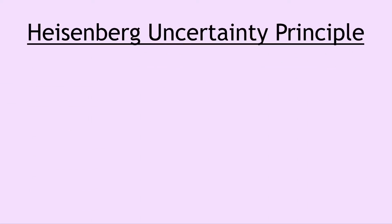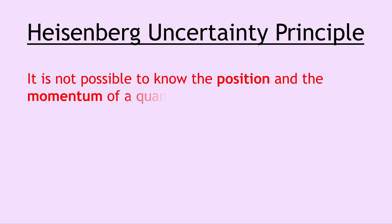Our first definition is the Heisenberg uncertainty principle, and this says that it is not possible to know the position and the momentum of a quantum particle simultaneously — simultaneously just means at the same time. Another way of saying this is that you can only precisely know either the position or the momentum of a quantum particle at any one time.